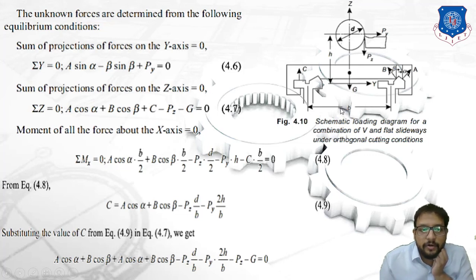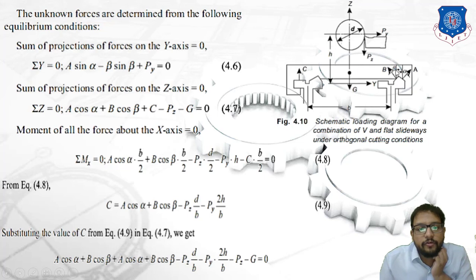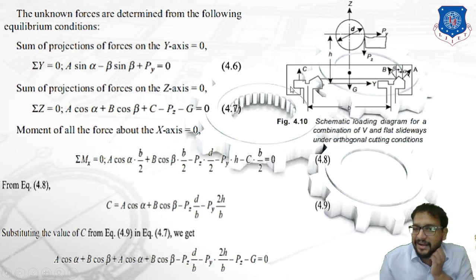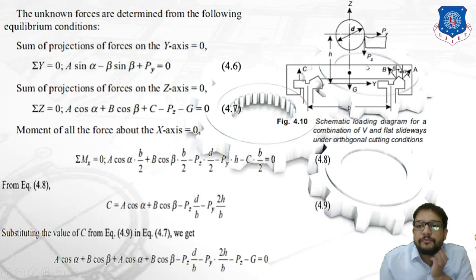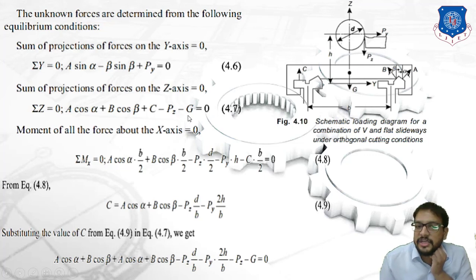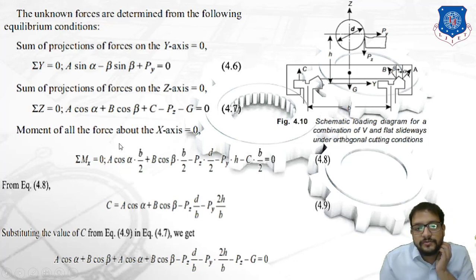For the sum of projections of forces on the Z axis equal to zero: the vertical components of A and B are A·cos(α) and B·cos(β), both acting upward. Force C acts upward on the flat surface. Pz and G both act downward. So the equation is: A·cos(α) + B·cos(β) + C − Pz − G = 0. This is equation 4.7.